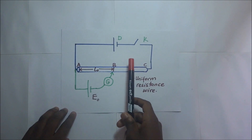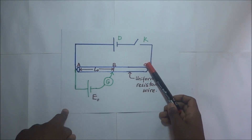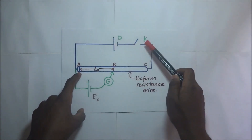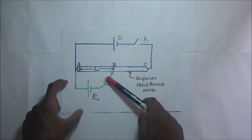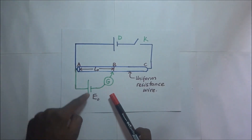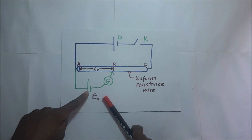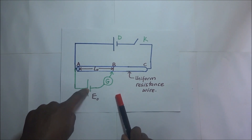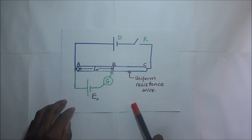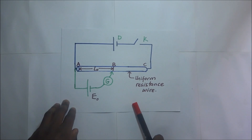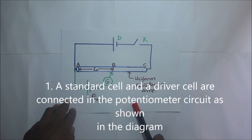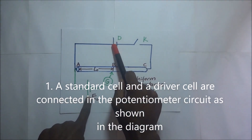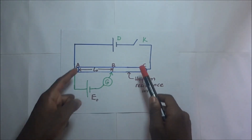After setting up the experiment, this is a potentiometer with a slide wire of uniform resistance. We have a driver cell and a switch, together with a galvanometer connected in series with a cell whose EMF is known. That is why we call it a standard cell — a standard cell is a cell whose EMF is known. The standard cell and the driver cell are connected in the potentiometer as shown.